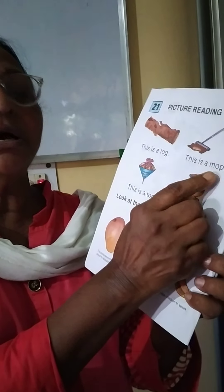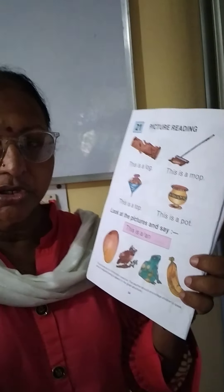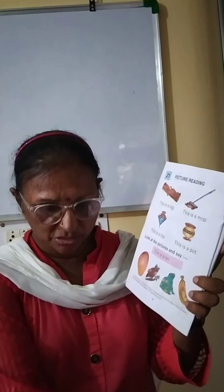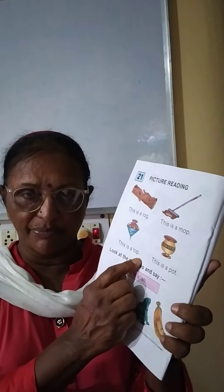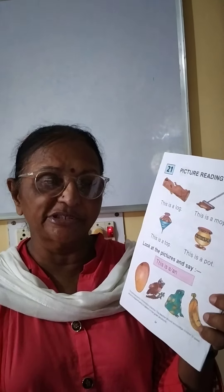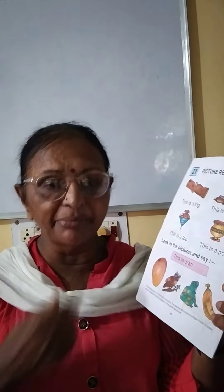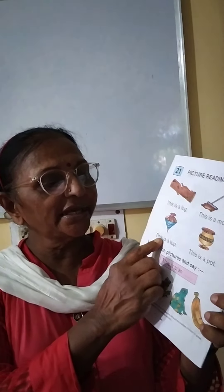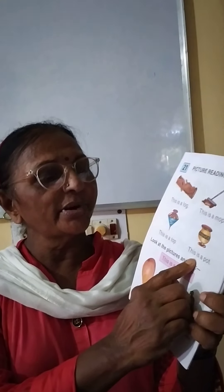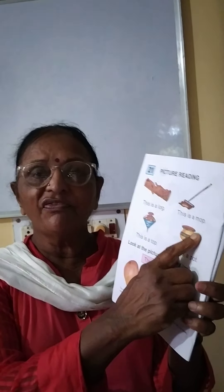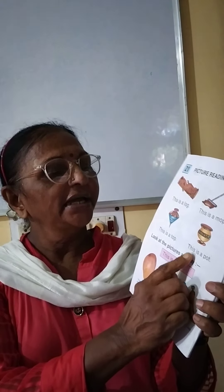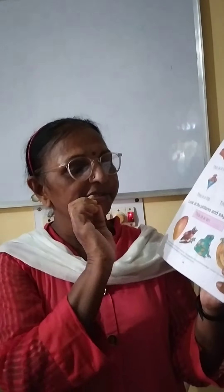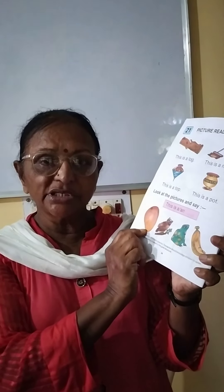This is a mop. The mop is used for swabbing the floor. The next one is: this is a top. Everyone likes to play with a top — even I played with one when I was a little girl. This is a top. The next one is: this is a pot — a flower pot.